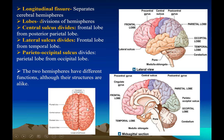I also want you to look up neuroplasticity. It's a very important phenomenon. Even though different structures of the brain have specific functions, they have discovered that if you lose a part of your brain due to an accident, other parts of the brain are able to jump in and perform that function.